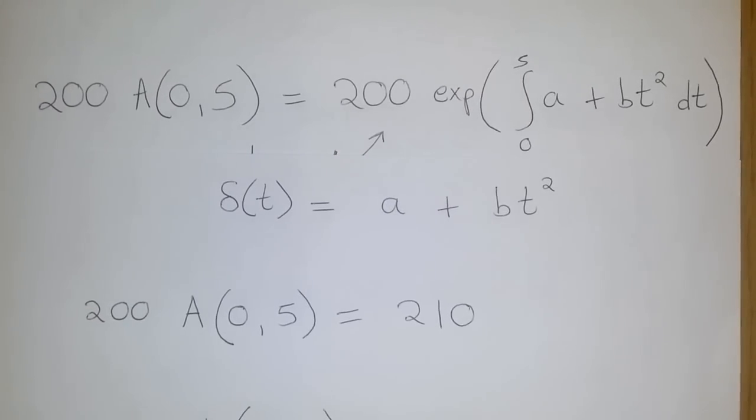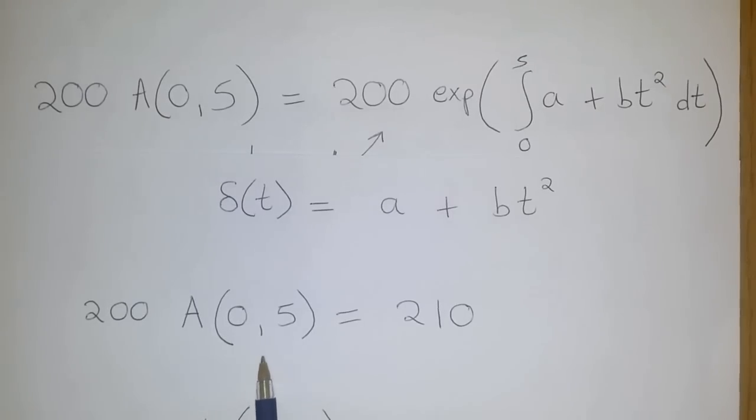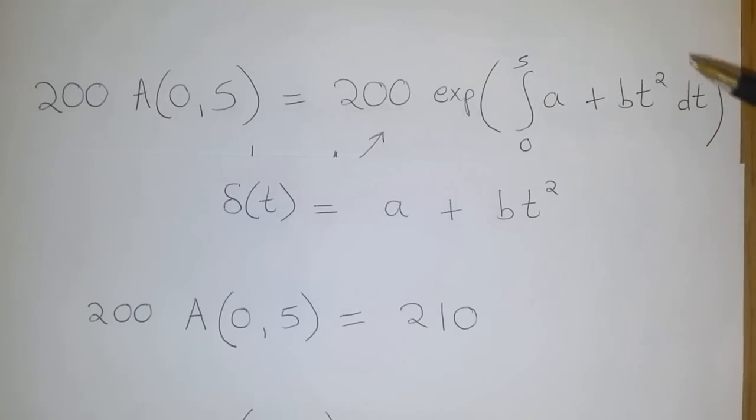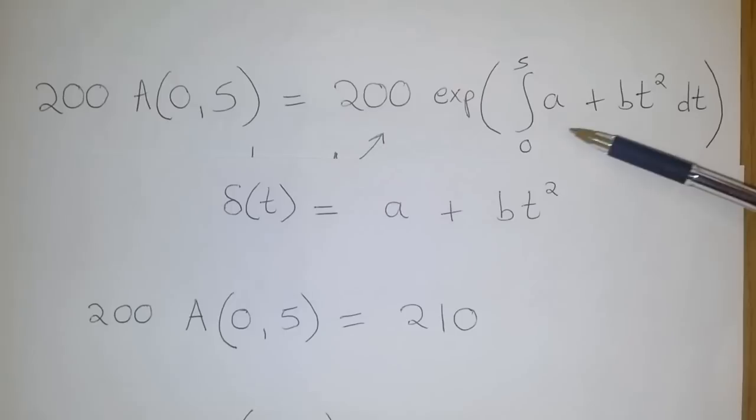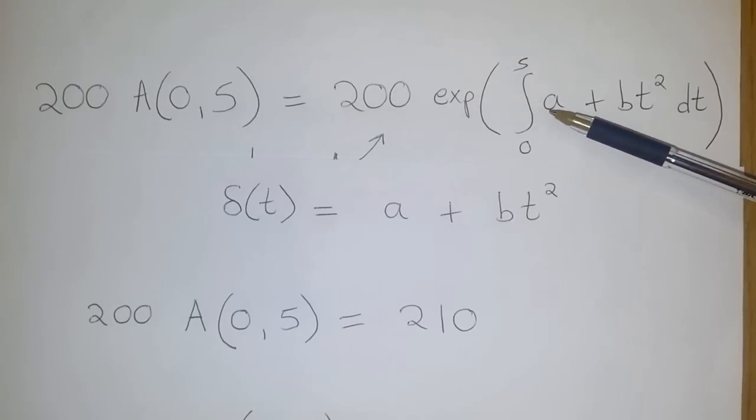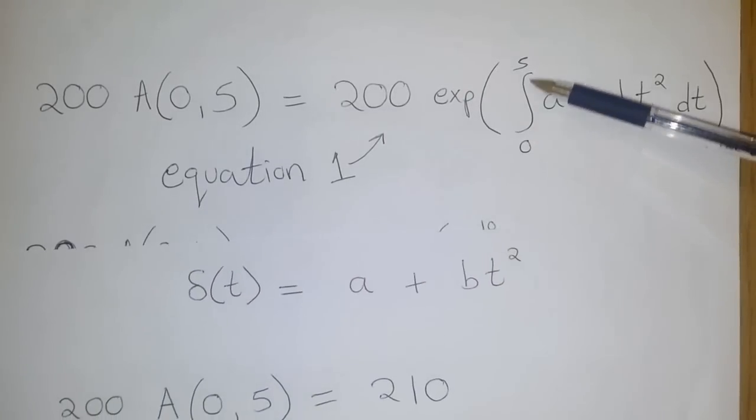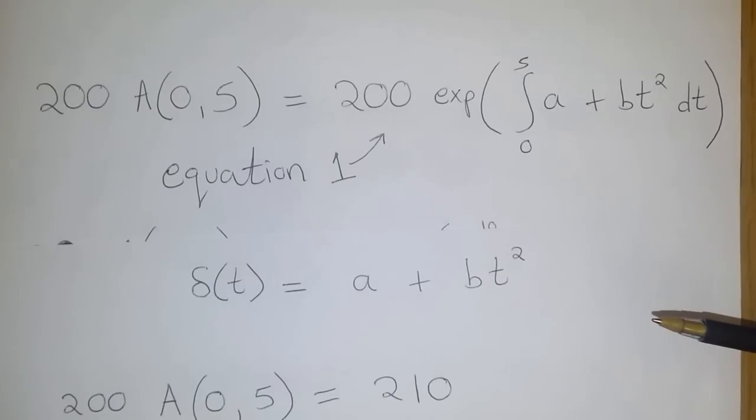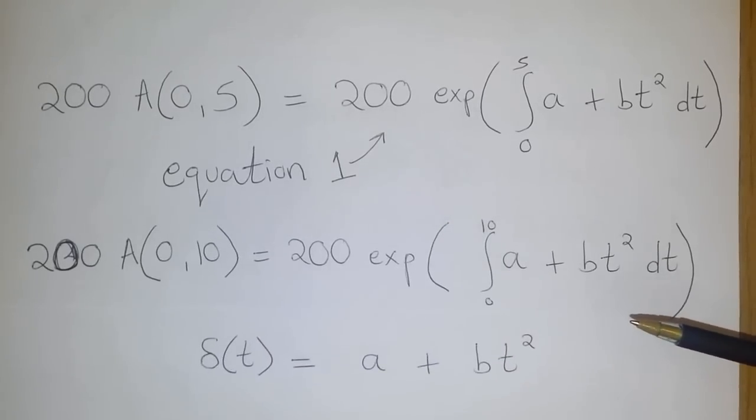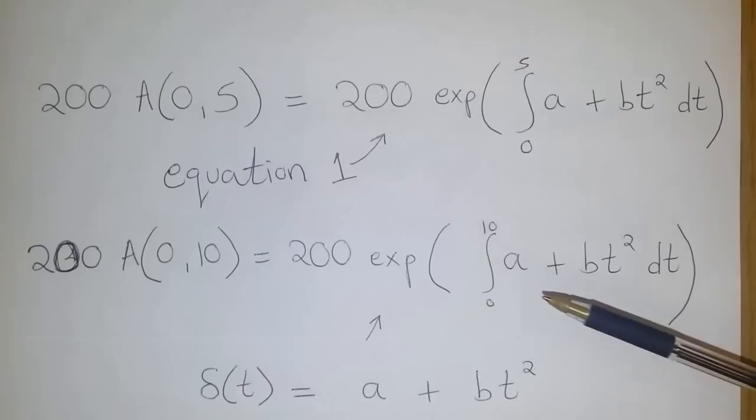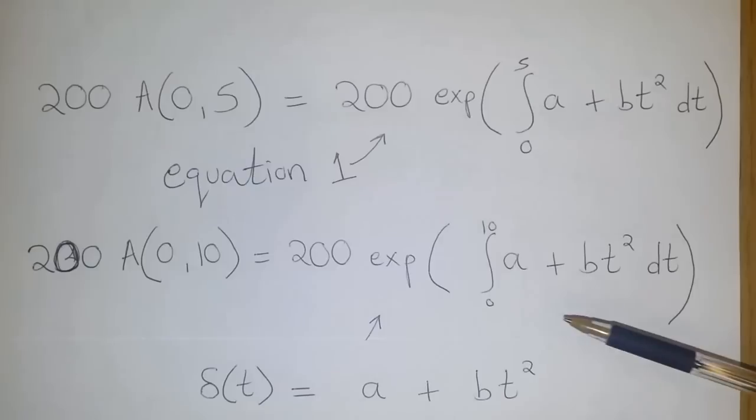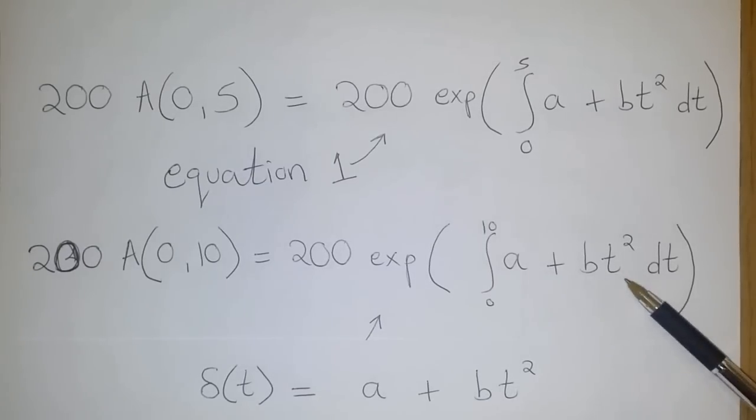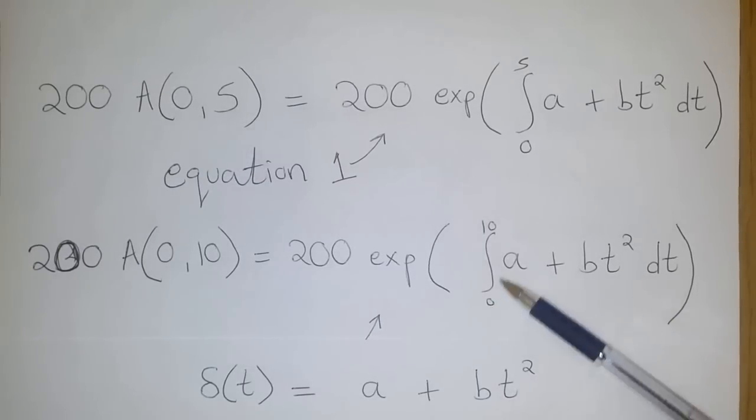So, applying what we know that the accumulation factor when dealing with the force of interest is simply given to you by the exponential of the integral of the force of interest over the period 0 to 5 years. Well, in the second case, we simply have the exponential of the integral of the force of interest, a plus b t squared, from time 0 to time 10.